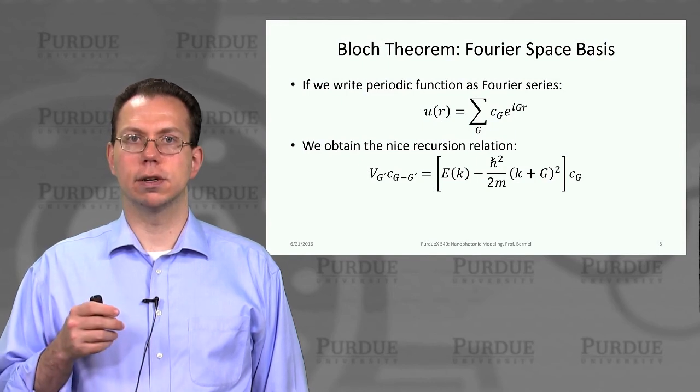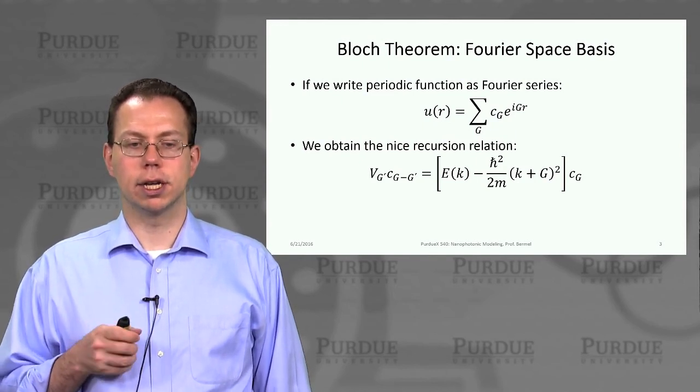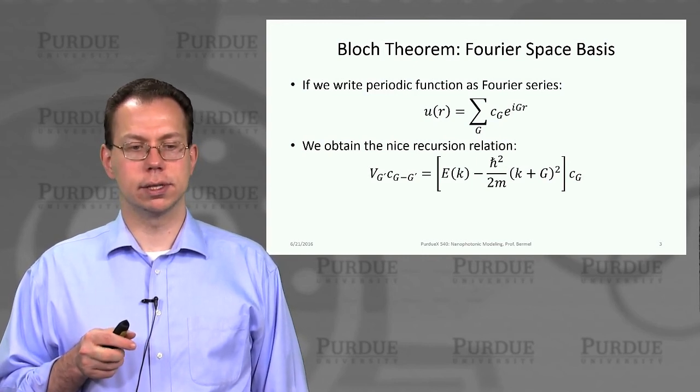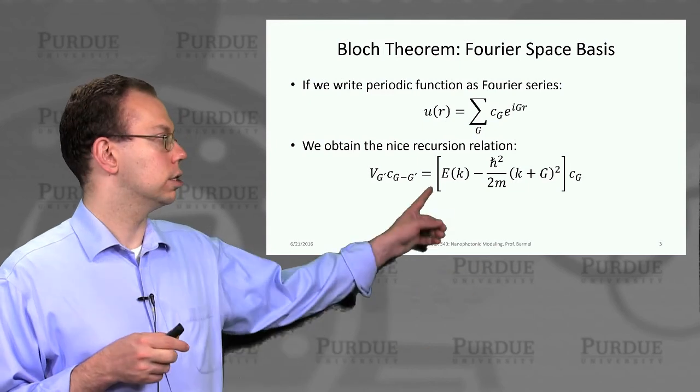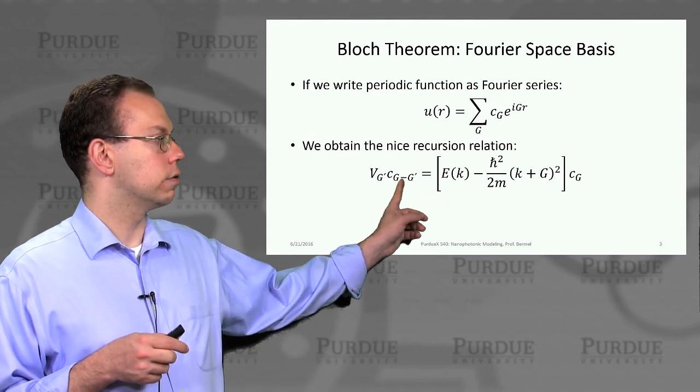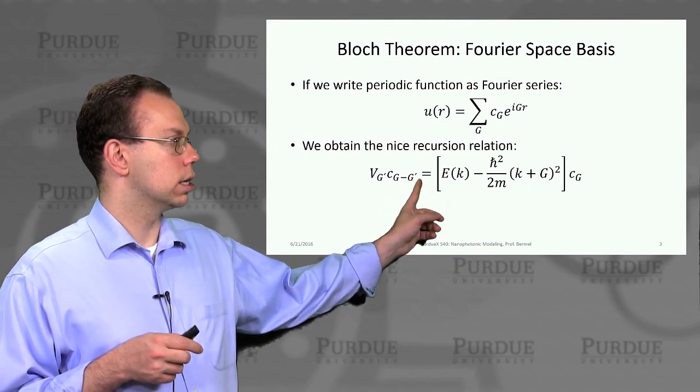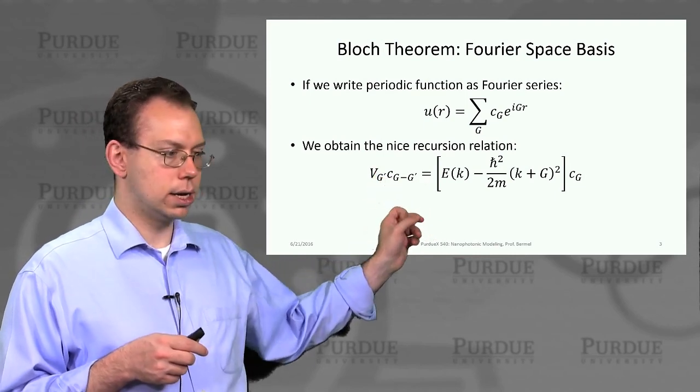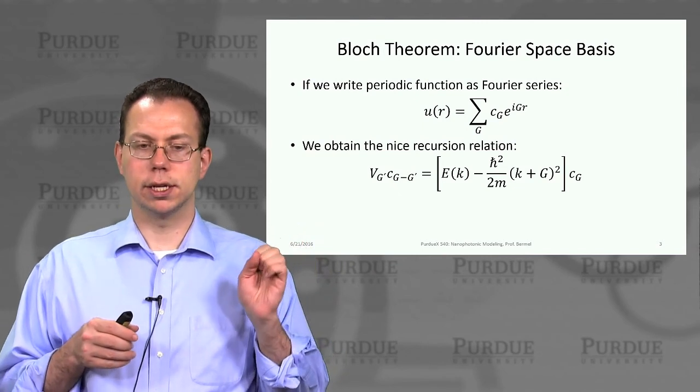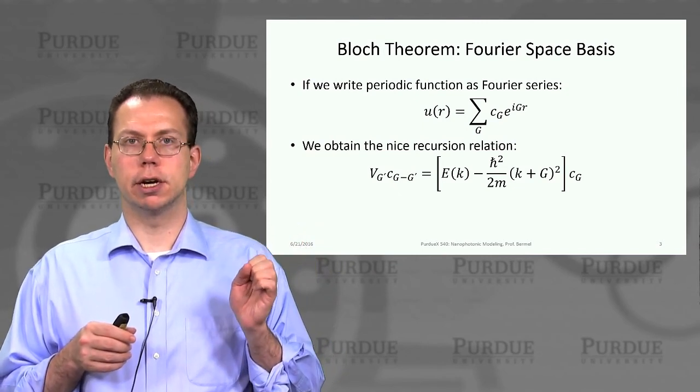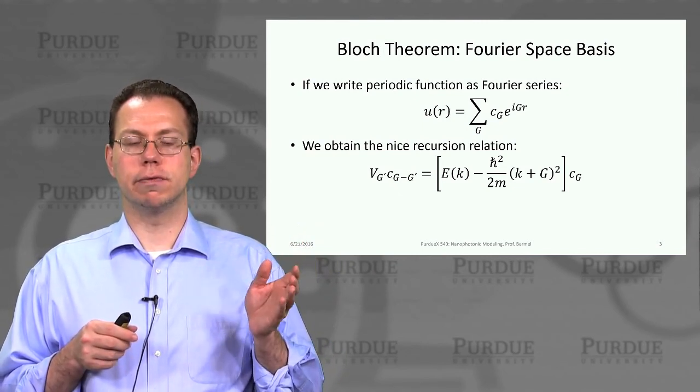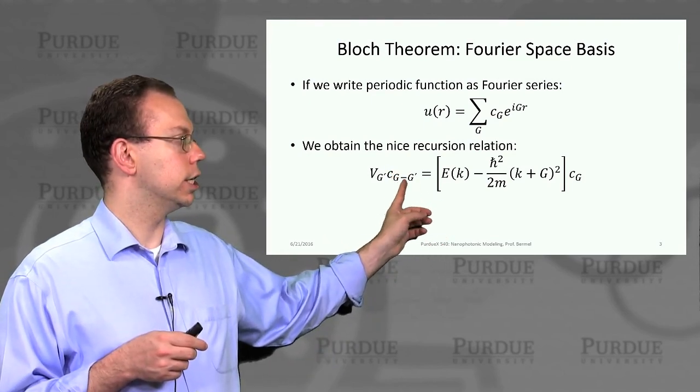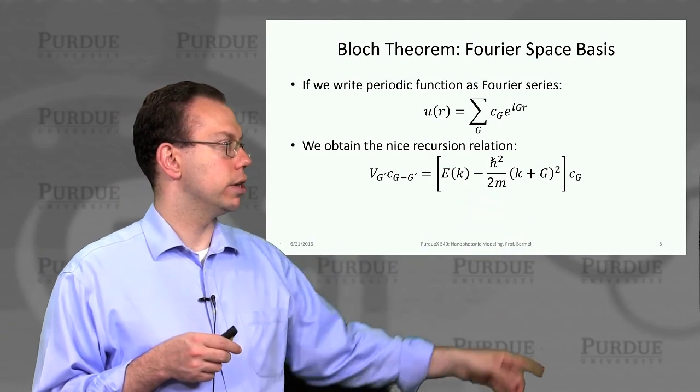We'll explain a little later in more detail how those work. But taking this as a given that we know the set of g values, we can obtain a nice recursion relationship from Schrodinger's equation, which relates the g prime component of the potential in Fourier basis times this coefficient c of g minus g prime to this value,